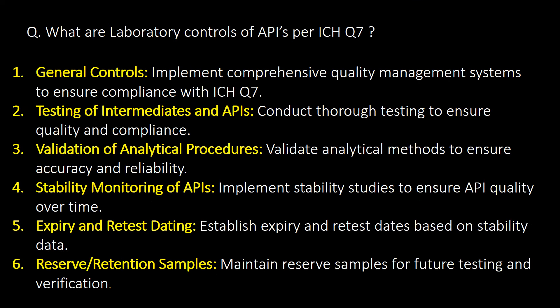What are the laboratory controls of APIs as per ICH Q7? General controls, testing of intermediates and APIs, validation of analytical procedures, stability monitoring of APIs, expiry and retest dating, and reserve or retention samples are the key laboratory controls of APIs as per ICH Q7.